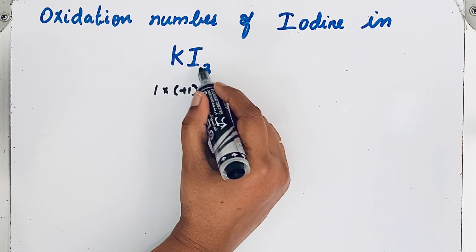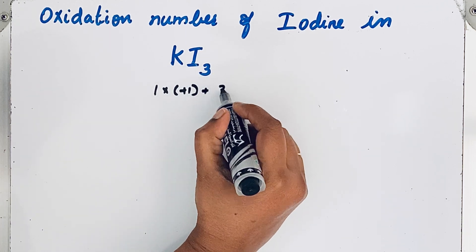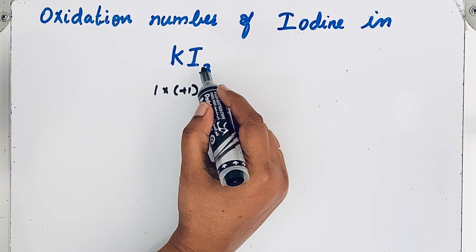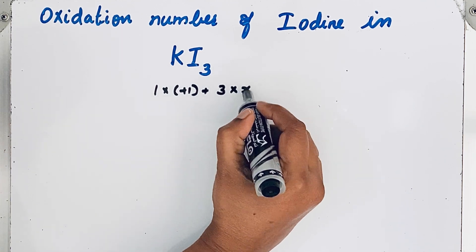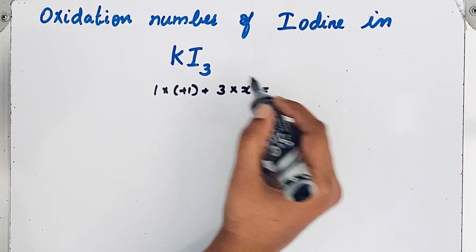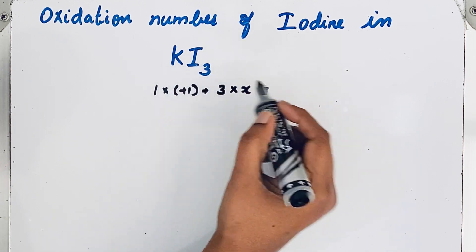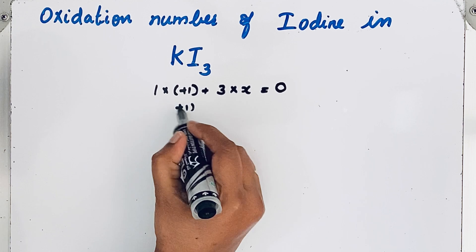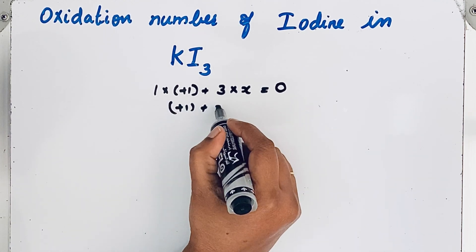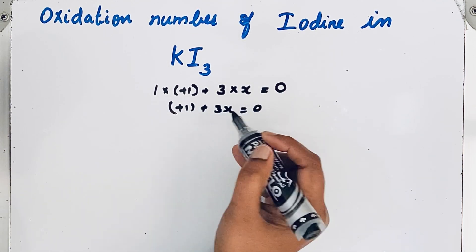Then we have 3 iodine atoms. We don't know the oxidation number of iodine. So we can keep it like x. So 3 into x. The algebraic sum because it is a neutral atom should be 0. So plus 1 plus 3x is equal to 0.